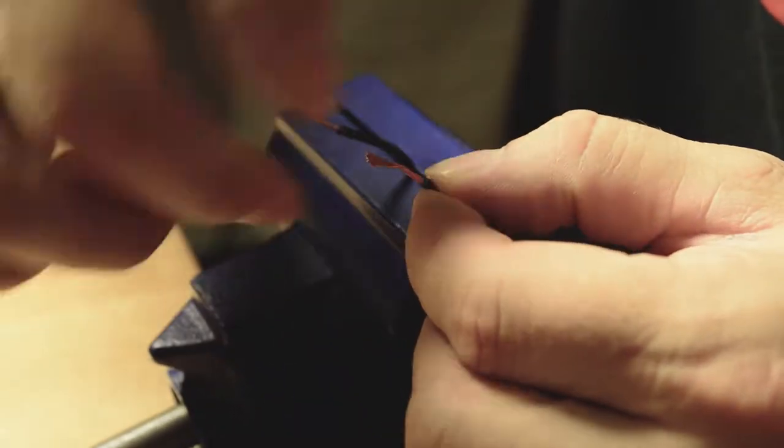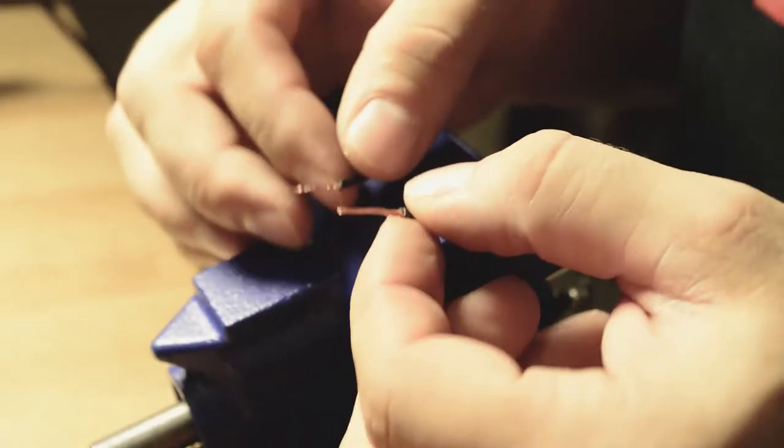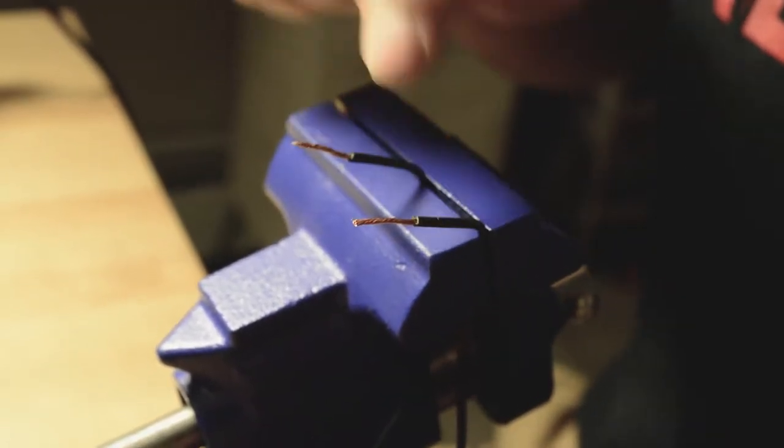The first rule of soldering is you don't talk about soldering. No I'm kidding. The first rule of soldering is you have to tin the wires. Tin the wires means we're going to apply solder to the wires first and then we're going to melt the wires to each other.